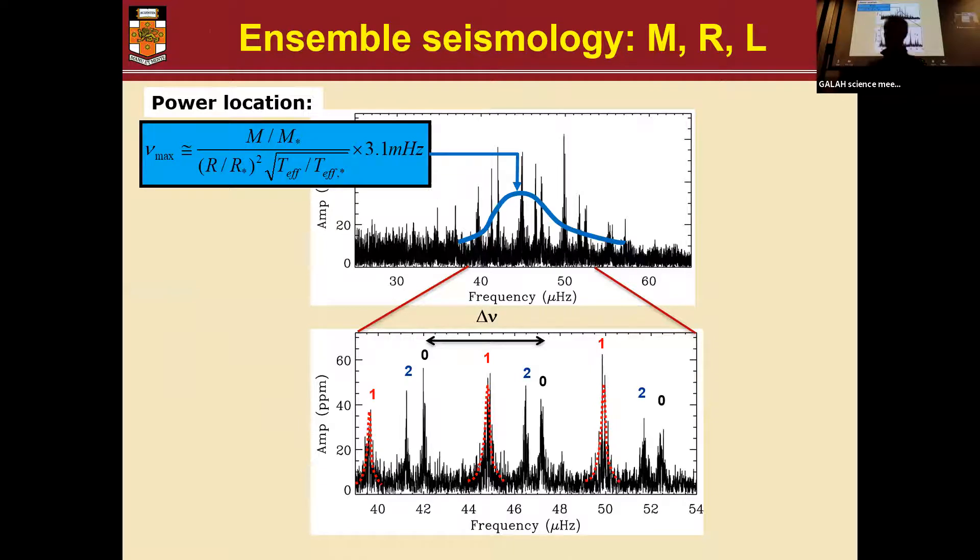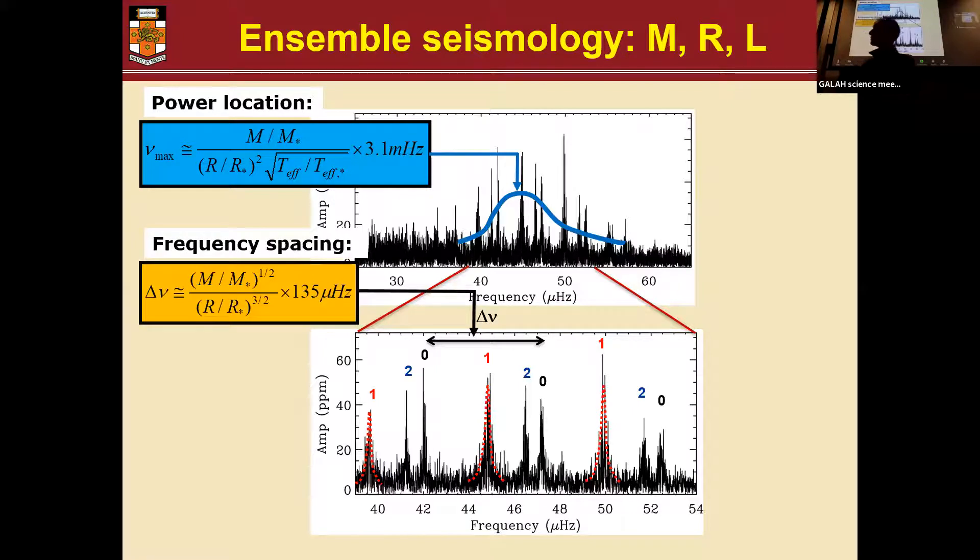What we do is we compress this signal into two data points per star. One of them is nu max, the frequency where most of the acoustic power comes out. If you squint at the top, you can see there's a maximum of where all the power is. That's nu max. And then we have delta nu, the frequency separation that tells you how much you have to shift the spectrum before it repeats itself. You can see this repeated pattern going on.